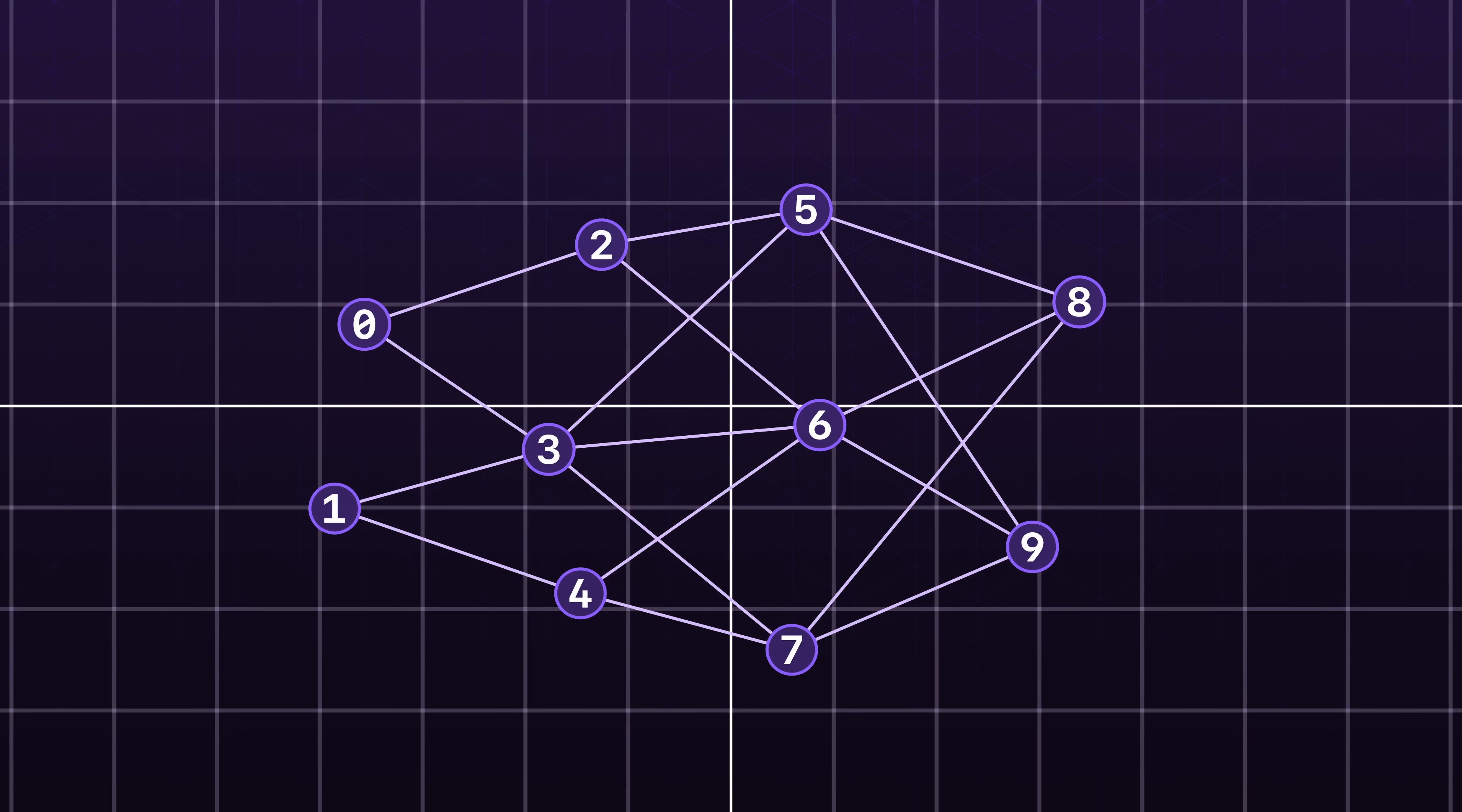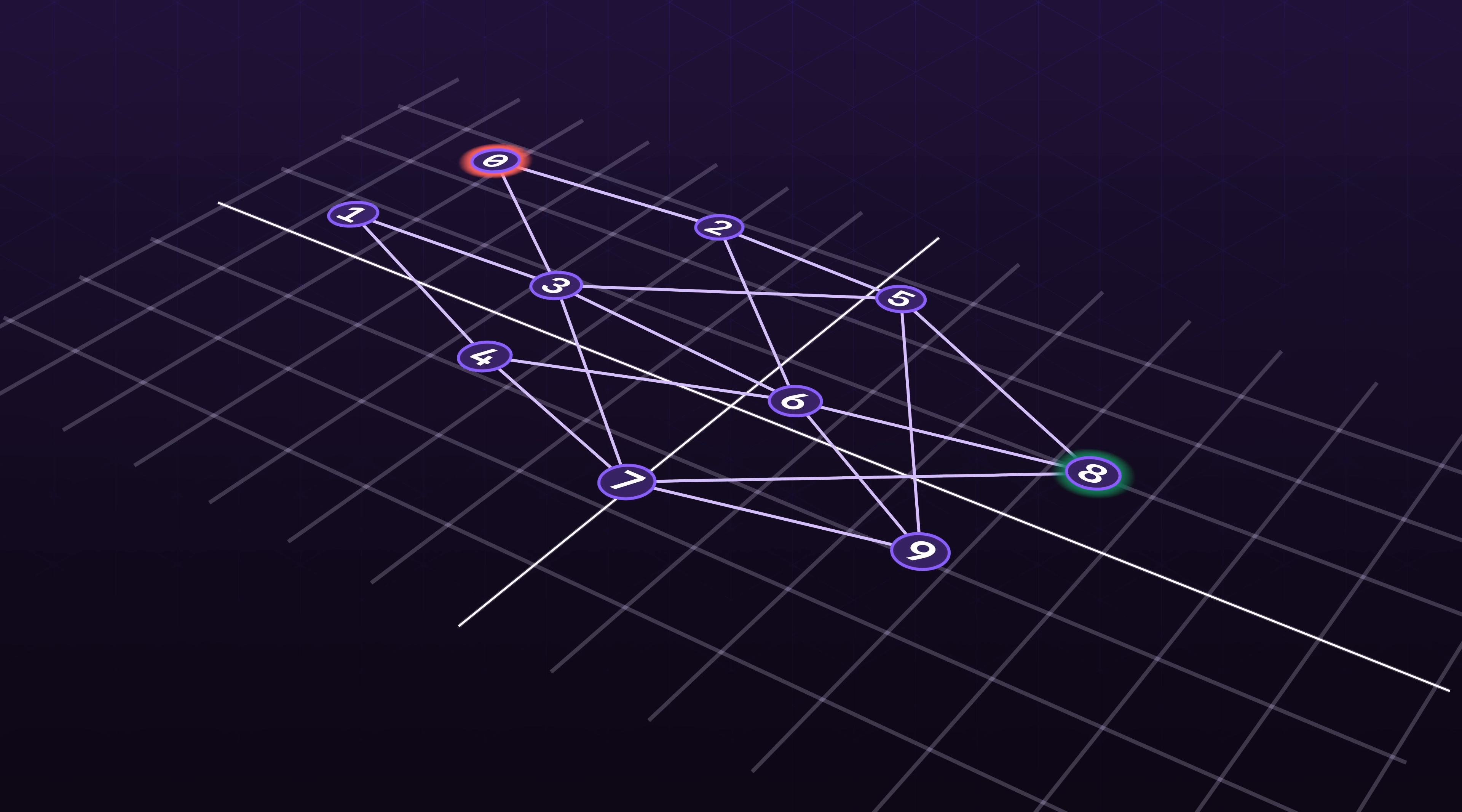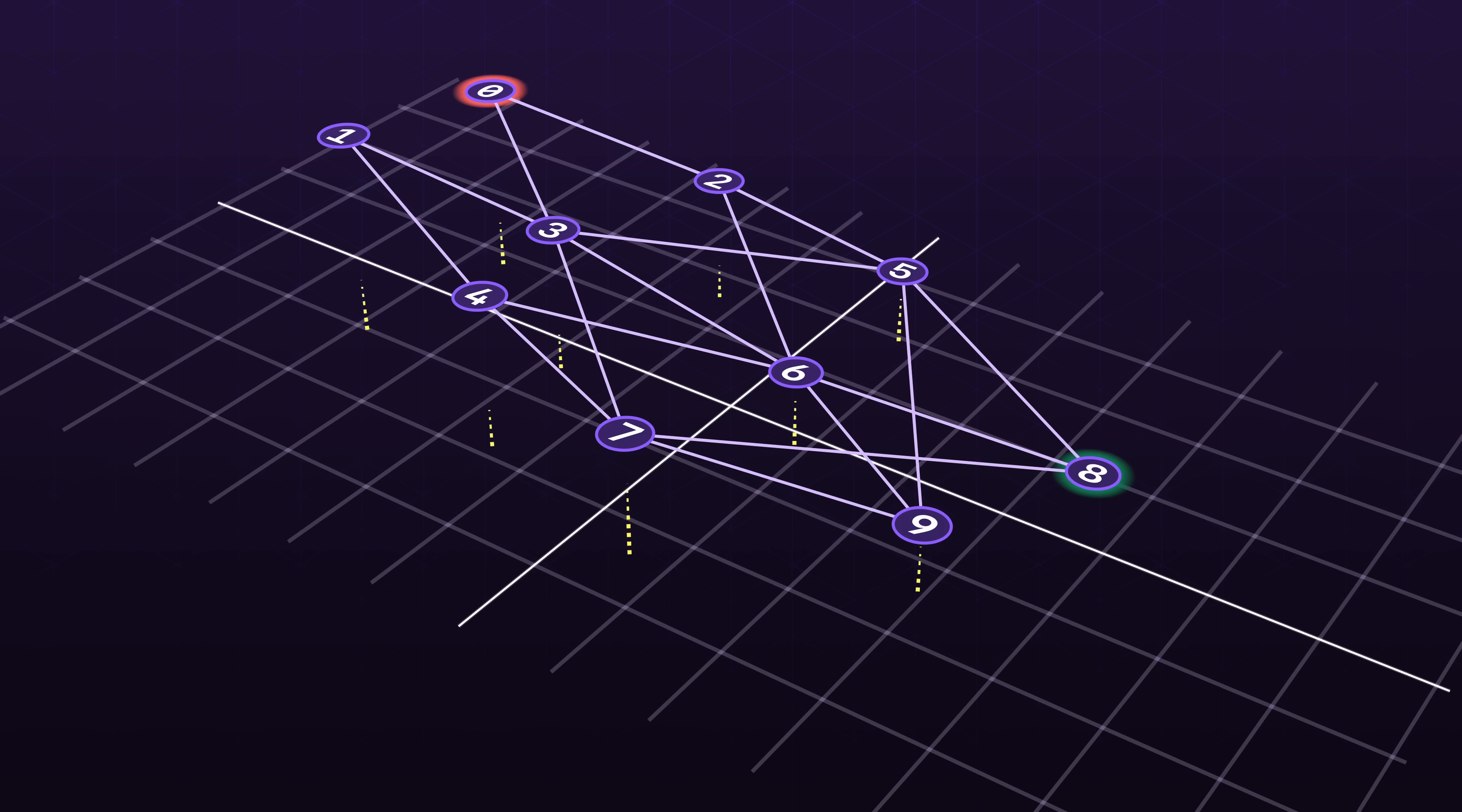One neat way to visualize how this works is to imagine that the heuristic is a third dimension to the graph. Uniform cost search incorporates the actual distance between the nodes, while the heuristic in a way tilts uniform cost search towards the goal state.